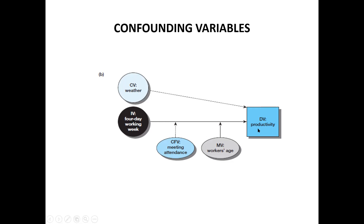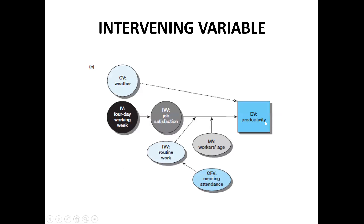In variables, if there is a relationship in which the independent variable first leads to an intermediate variable and then that variable leads to the dependent variable, we call it the intervening variable. Job satisfaction is the intervening variable between the independent variable working week and the dependent variable productivity. These are the variables you have to identify in your research.